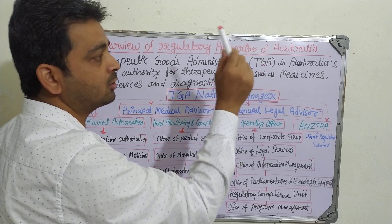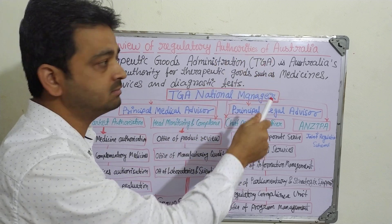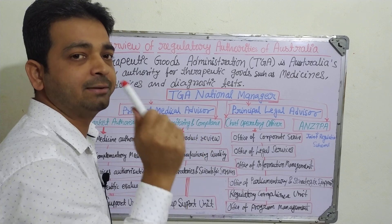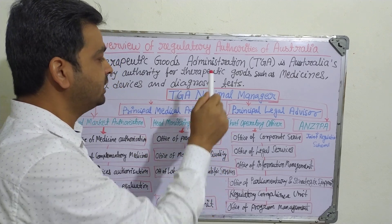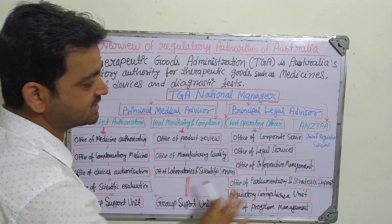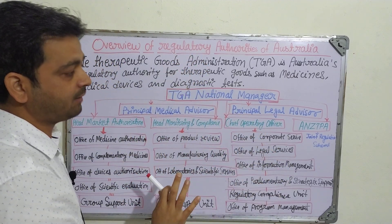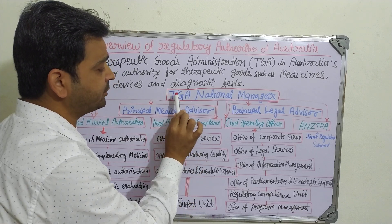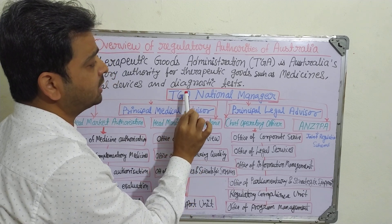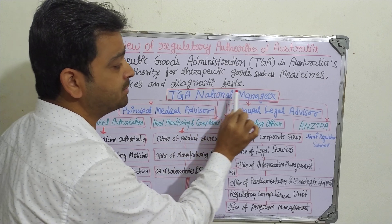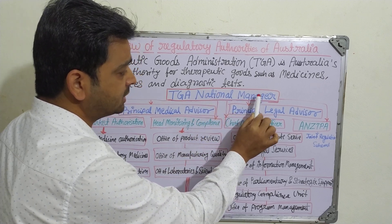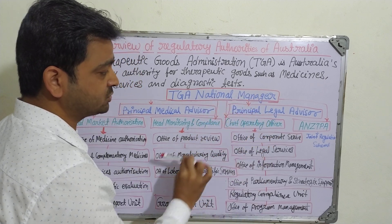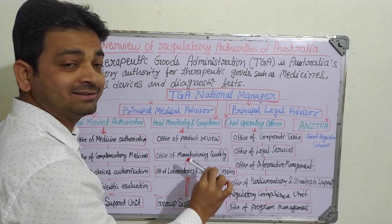So whenever the word Australia comes up, remember TGA — Therapeutic Goods Administration. Let's now discuss the organizational structure of the TGA. Everything comes under the control of the National Manager, who manages at the national level for the entire country.